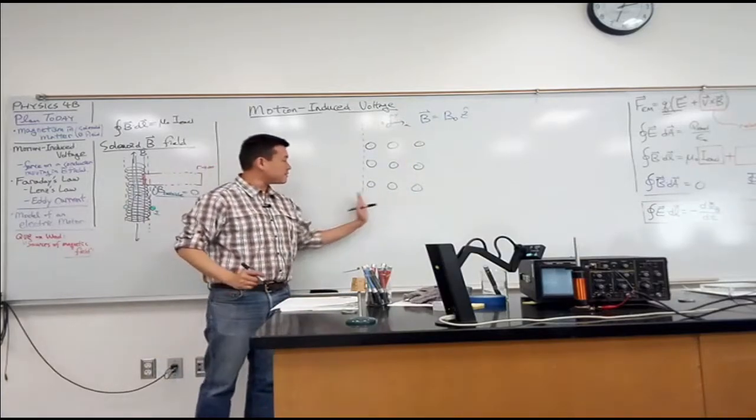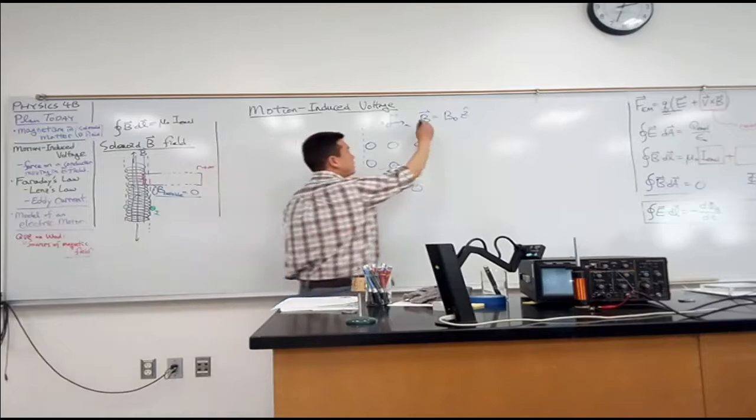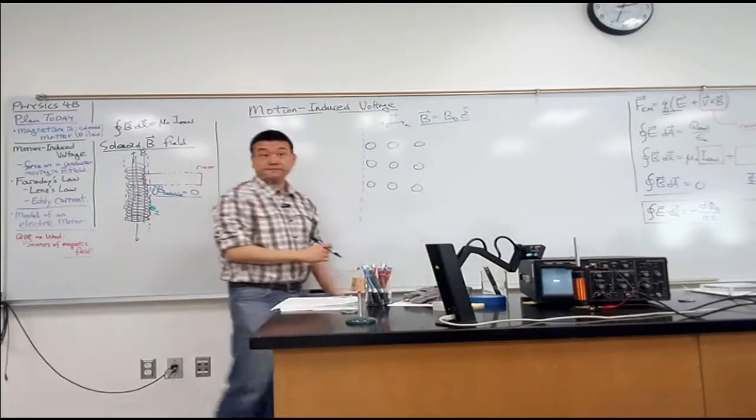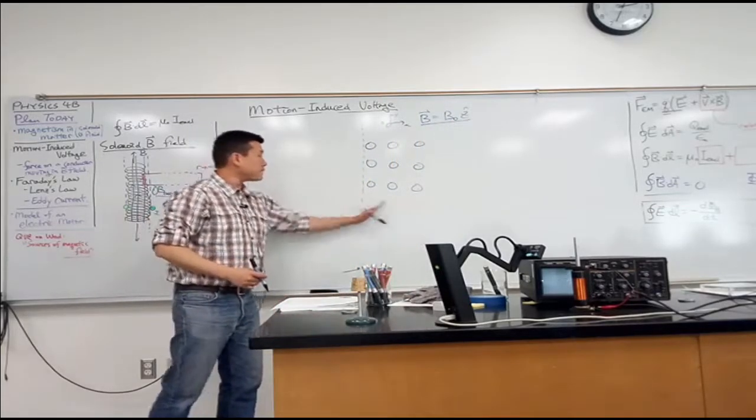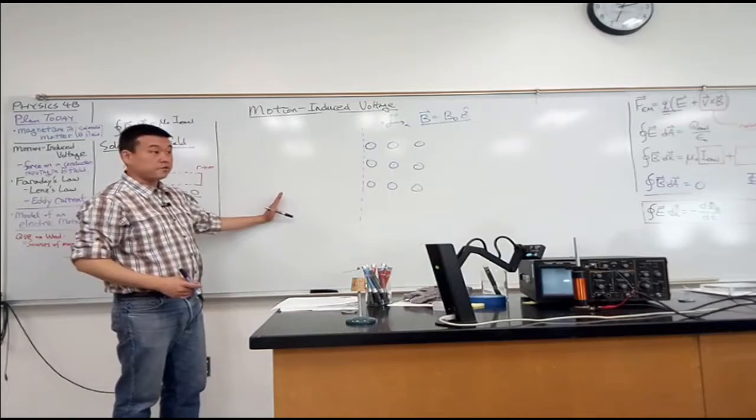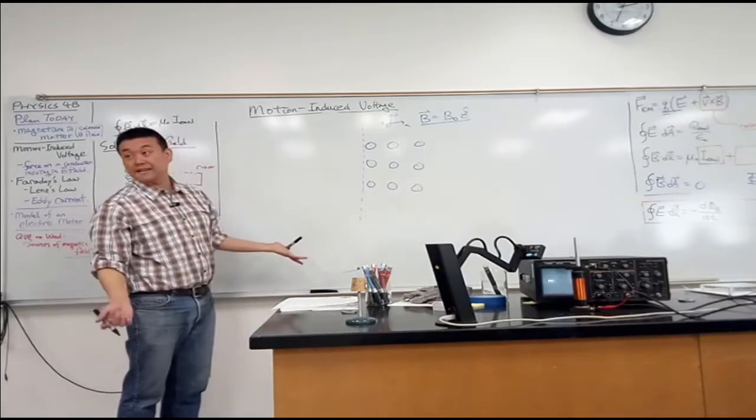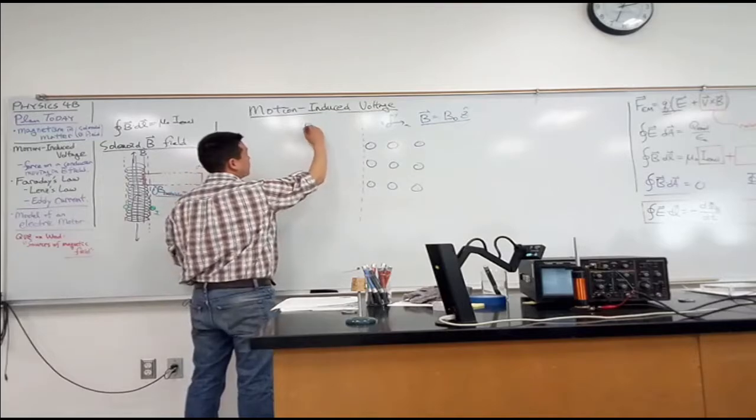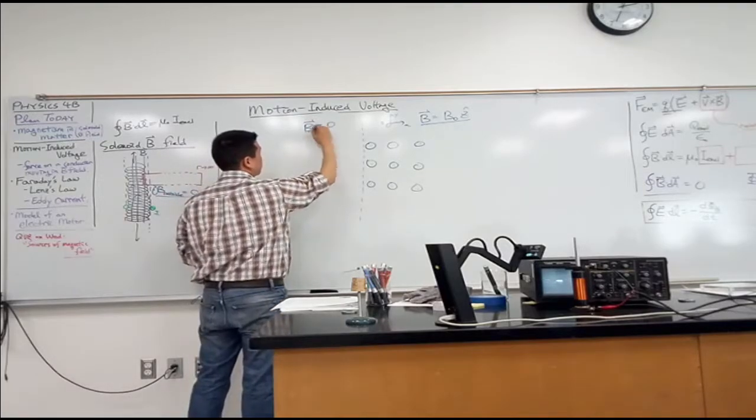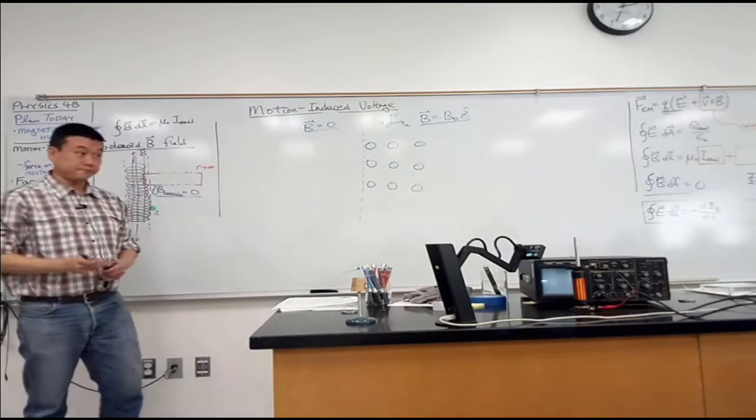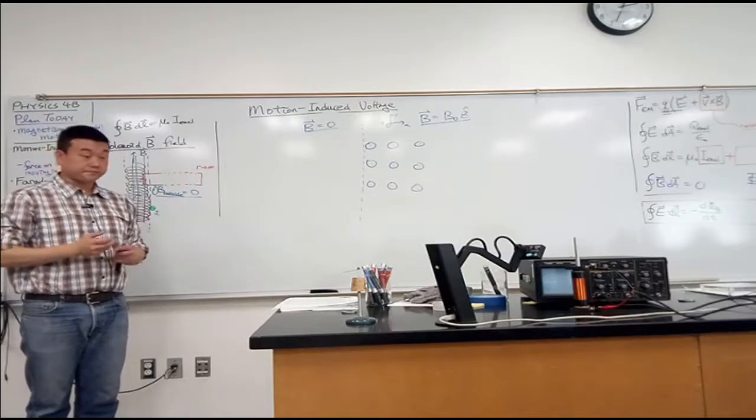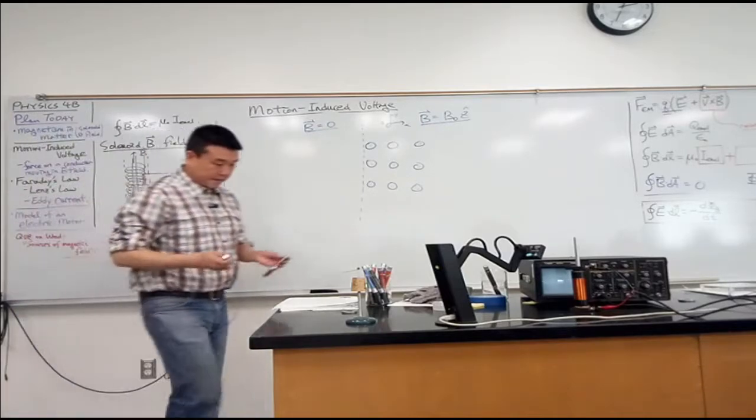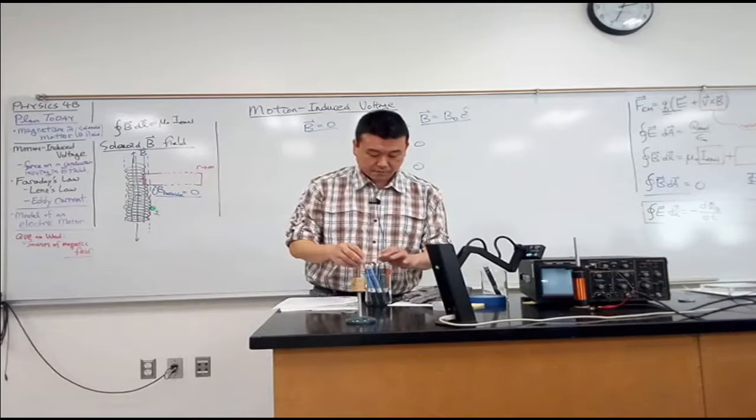So the right-hand side of this boundary, you have this uniform magnetic field. The left-hand side of the boundary, you have no magnetic field. So left-hand side of the boundary, your magnetic field is zero.